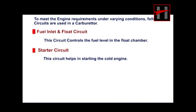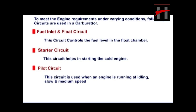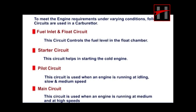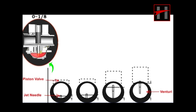The pilot circuit is used when an engine is running at idling, slow, and medium speed. The main circuit is used when an engine is running at medium and high speeds. As the throttle opens, the speed increases, and according to the speed at which a vehicle is running, the carburetor uses the appropriate circuit for the delivery of fuel.